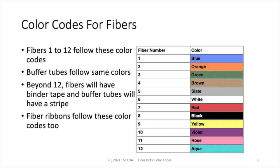Let's start with the color codes for fibers. Fibers are color coded 1 through 12 using these colors. If you have a loose tube cable, you'll have 12 fibers in a buffer tube in most cables. The buffer tubes will then be color coded with the same colors. So if you have a 144 fiber cable, you'll have 12 buffer tubes colored with the same sequence.